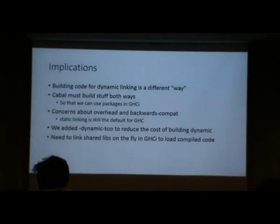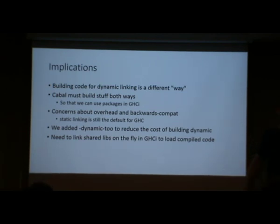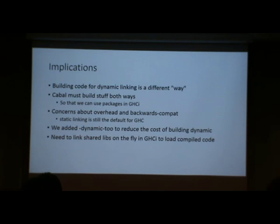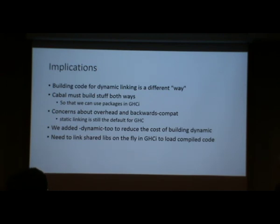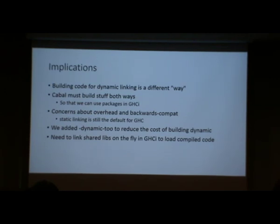So we decided to make this switch. We realised that first of all you've got to build things a different way, because the way that you call functions changes. So we've got to build Haskell code twice — once for static linking and once for dynamic linking. This means Cabal is going to build stuff both ways, so that you've got packages available for static use and also for use in GHCi. There were concerns about overheads because dynamic linking is slightly slower than static linking, so we left the default as static linking. When you build binaries on the command line you get static linking, but if you use GHCi then you'll use dynamic linking.